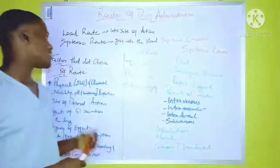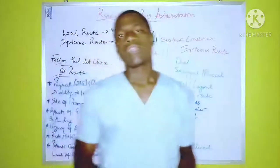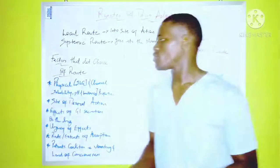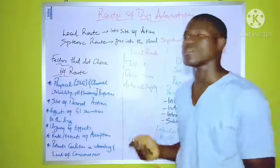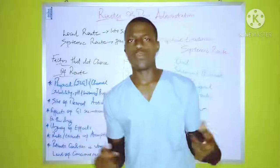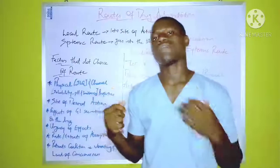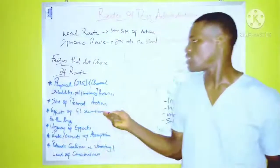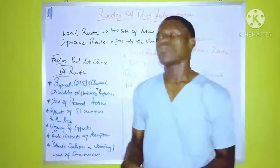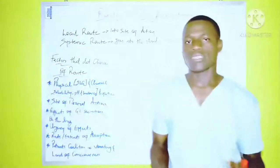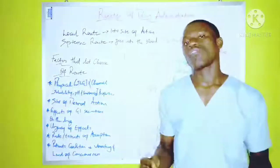There are several factors that determine the choice of route through which a drug can be administered. The first is the physical and chemical properties of the drug. The physical property refers to the state of matter of the drug — that's the form in which the drug exists, whether solid, liquid, or gaseous state — which is likely to determine the route through which the drug can be administered.